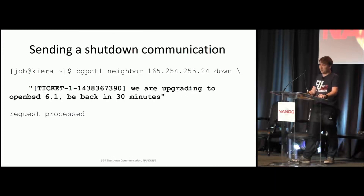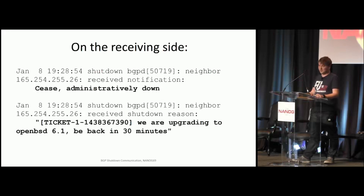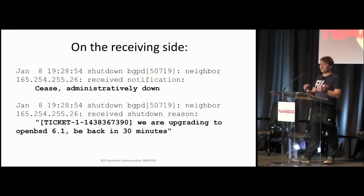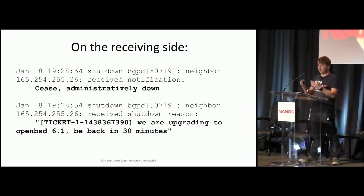What this looks like — for instance on OpenBSD, which already supports this — I can just type on the command line that this neighbor needs to be disabled, and append a short message such as: 'This is the ticket ID, we're upgrading and we'll be back in 30 minutes.' On the receiving side, you get the syslog message saying the session is now down, and next to that is a message containing my shutdown communication sent to that specific peer. I think this will greatly enhance operations in the peering world.